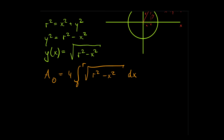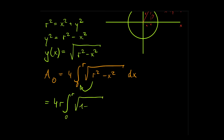I find this absolutely amazing and the integral is actually easy to solve — we just have to apply a simple substitution. We extract r squared out of the square root to get an r, and since r is constant we extract it out of the integral. So we have 4r outside the integral, times the integral from 0 to r of the square root of 1 minus x squared over r squared, dx.